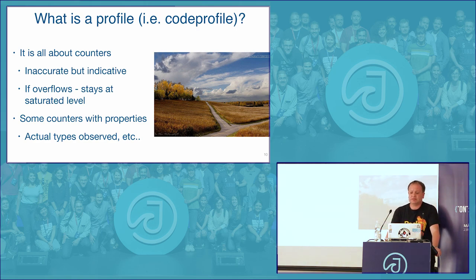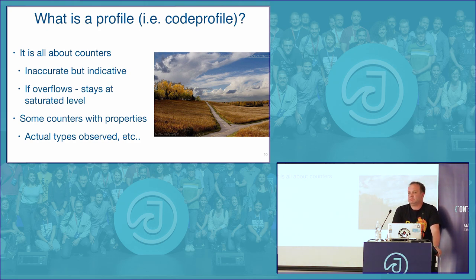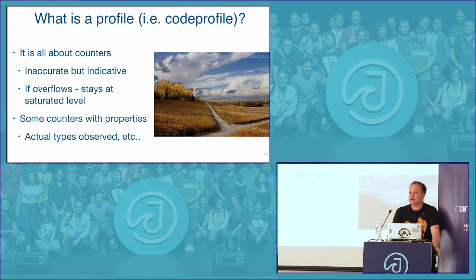Let's talk about code profiles. A code profile is a set of counters needed to describe to the VM how a particular method was executed previously during the warm-up phase. If you have a method with if-else branches, the JVM wants to know which branches are more likely to happen and which are never taken. This way we can optimize for the cases we actually hit and not compile for cases we don't care about. The numbers associated with those conditionals are somewhat approximate — not completely accurate.